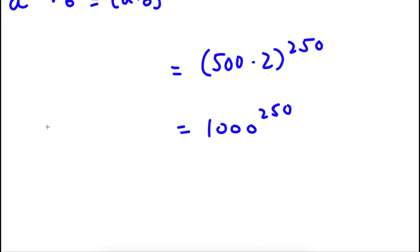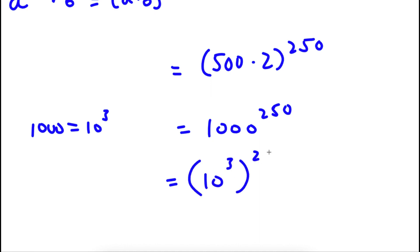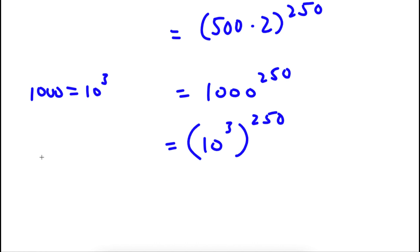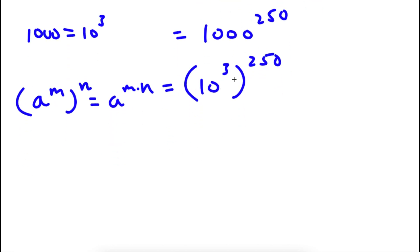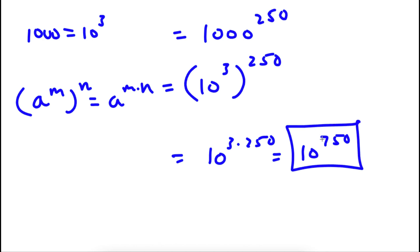And we can actually simplify this. 1,000 is equal to 10 to the power of 3. So now I have 10 to the power of 3 to the power of 250. Now if I have something in the form A to the power of M to the power of N, this is equal to A to the power of M times N. So 10 to the power of 3 to the power of 250 equals 10 to the power of 3 times 250, which is equal to 10 to the power of 750. So this is my answer.